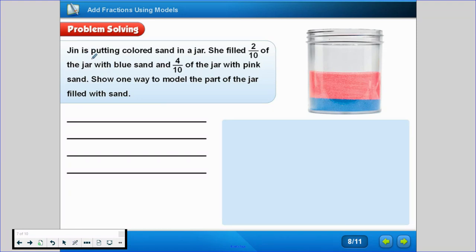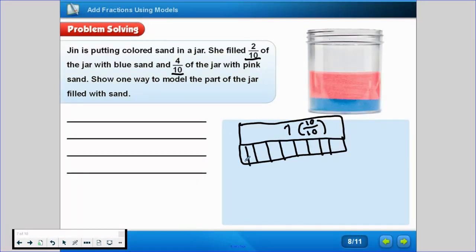Here's one more. Min is putting colored sand in a jar. She filled 2/10 of the jar with blue sand and 4/10 of the jar with pink sand. Let's show one way to model the parts of the jar filled with sand. So I think the easiest way here is if we do our fraction strips. So this is my one whole, which we could also think of as 10/10, right? Then I'm going to draw 10 parts below: 1, 2, 3, 4, 5, 6, 7, 8, 9.